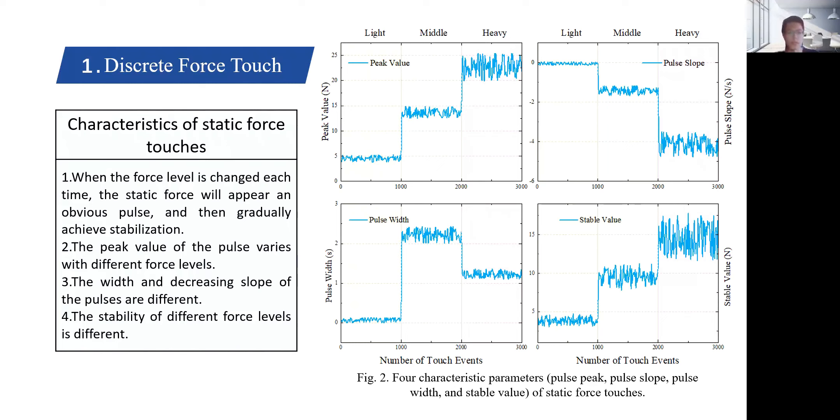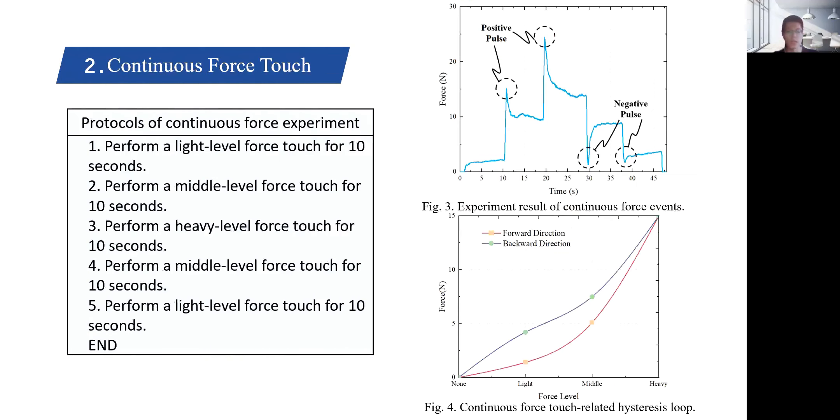The figure on the right shows the four characteristic values of static force touches. When applying light force, the volunteer has a strong ability to control it, and the controllability gradually decreases with the boost of force level, which makes it more difficult to maintain the heavy-level force and the force touch will be more unstable.